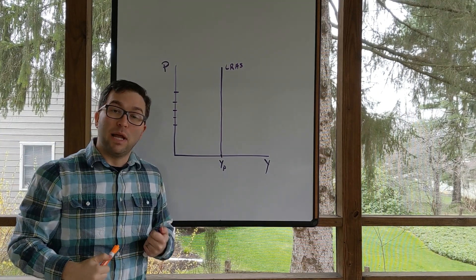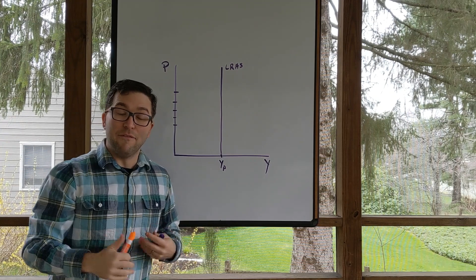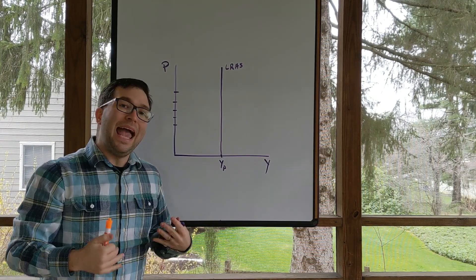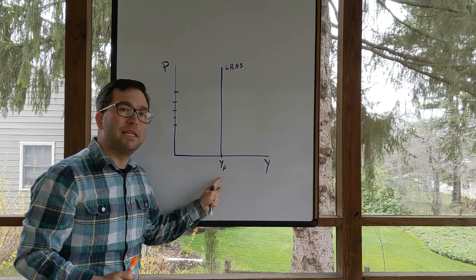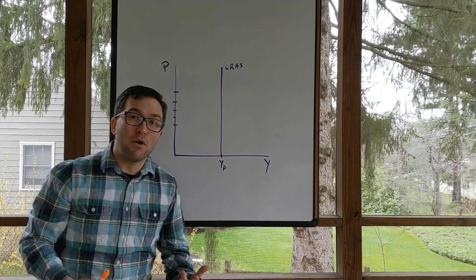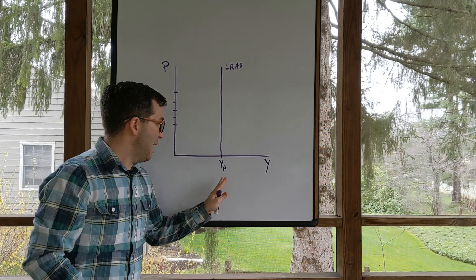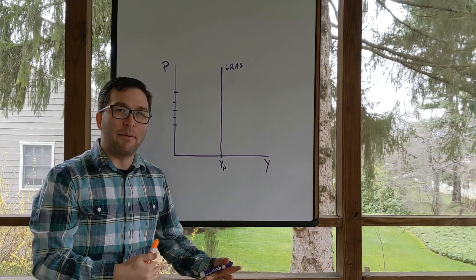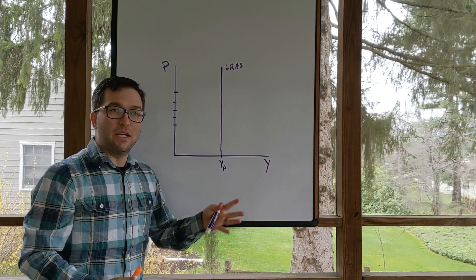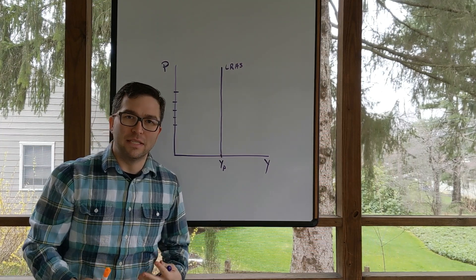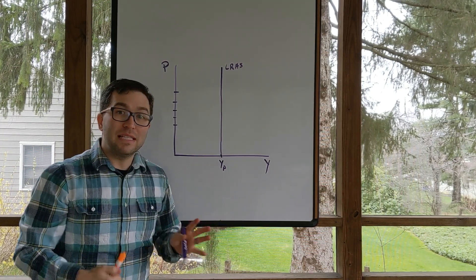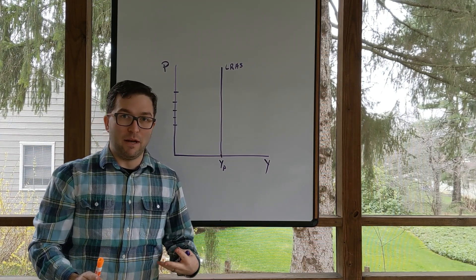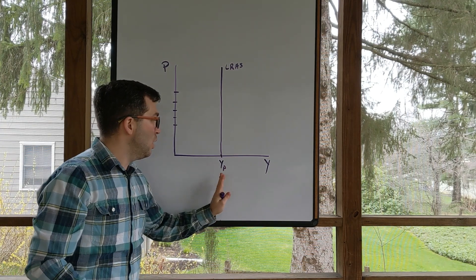Now we could see long run aggregate supply increase or decrease if there's a shock to the economy. Anything that changes overall potential GDP. Remember those three things that we talked about that can change potential GDP: change in inputs, so you've got capital or labor; the change in technology; or better economic institutions.